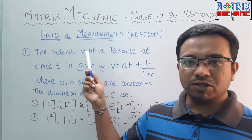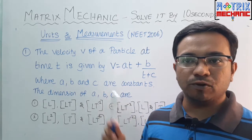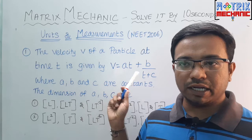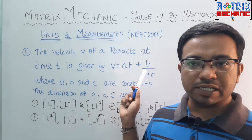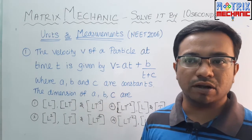See this question. This question comes from units and measurements chapter. This question was asked in NEET 2006. The velocity v of a particle at time t is given by the relation v equals at plus b divided by t plus c, where a, b, c are constants.